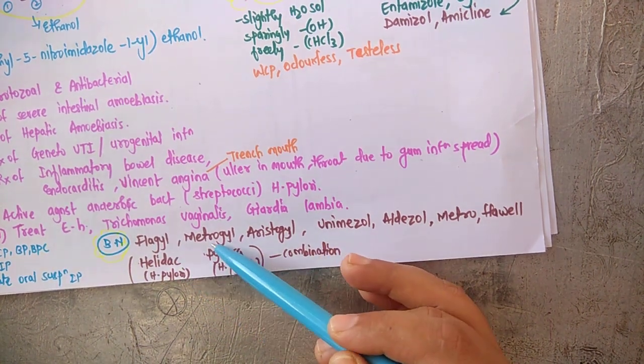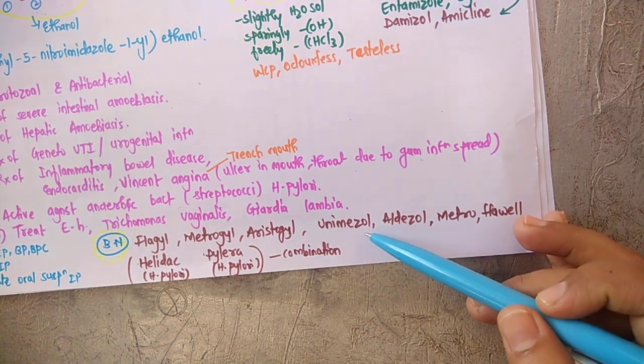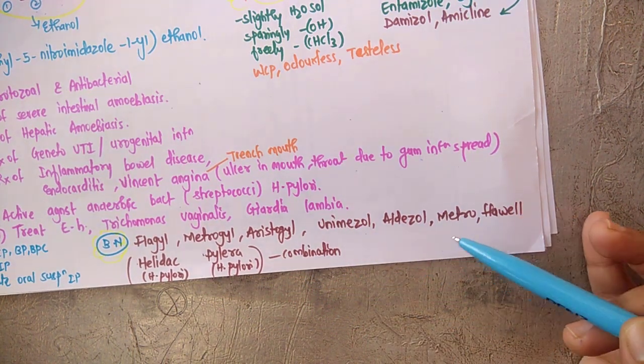Coming towards the brand names, these are the commonly available brands in the market. Amongst the famous is Flagyl, then Metrogel, Flagyl, Metrogel, Aristogel, Unimezole, Aldazole, Metro, Flovel. And the combination preparations to treat H. pylori are Helidac and Pylera.